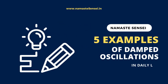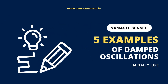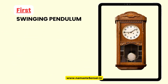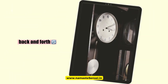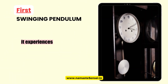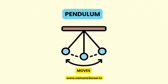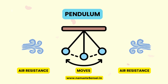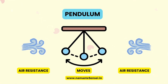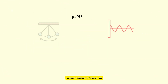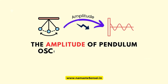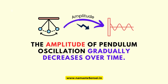5 Examples of Damped Oscillations in Daily Life. First, Swinging Pendulum. When a pendulum swings back and forth, it experiences air resistance, which acts in the opposite direction to its motion. As the pendulum moves, it displaces air molecules, and the air resistance dissipates some of its energy. Consequently, the amplitude of the pendulum's oscillations gradually decreases over time due to the damping effect of the air resistance.